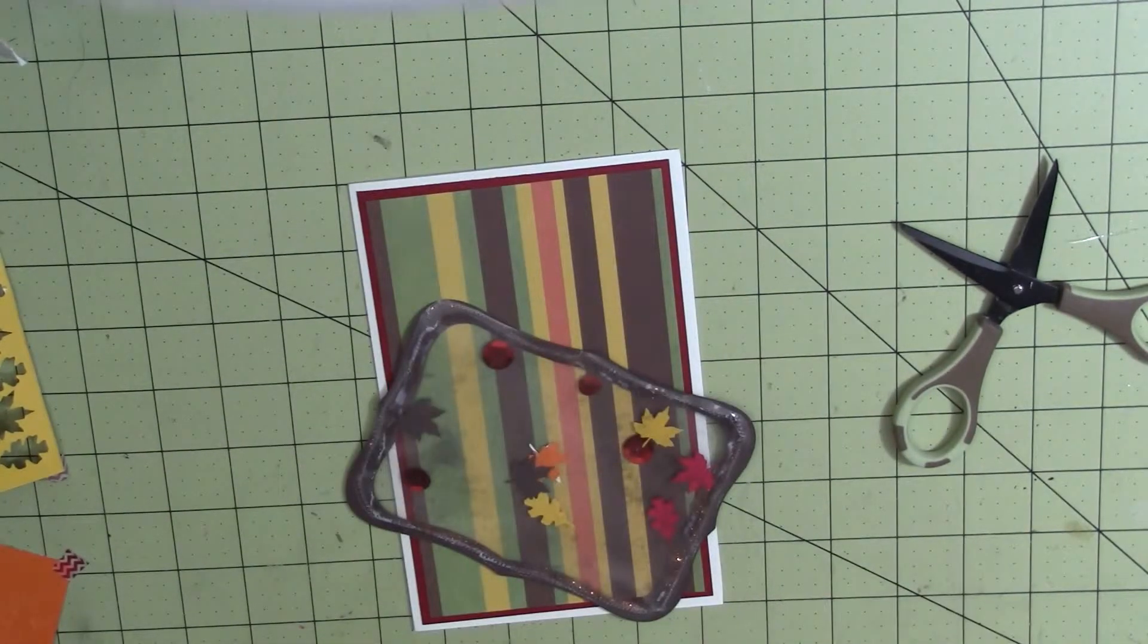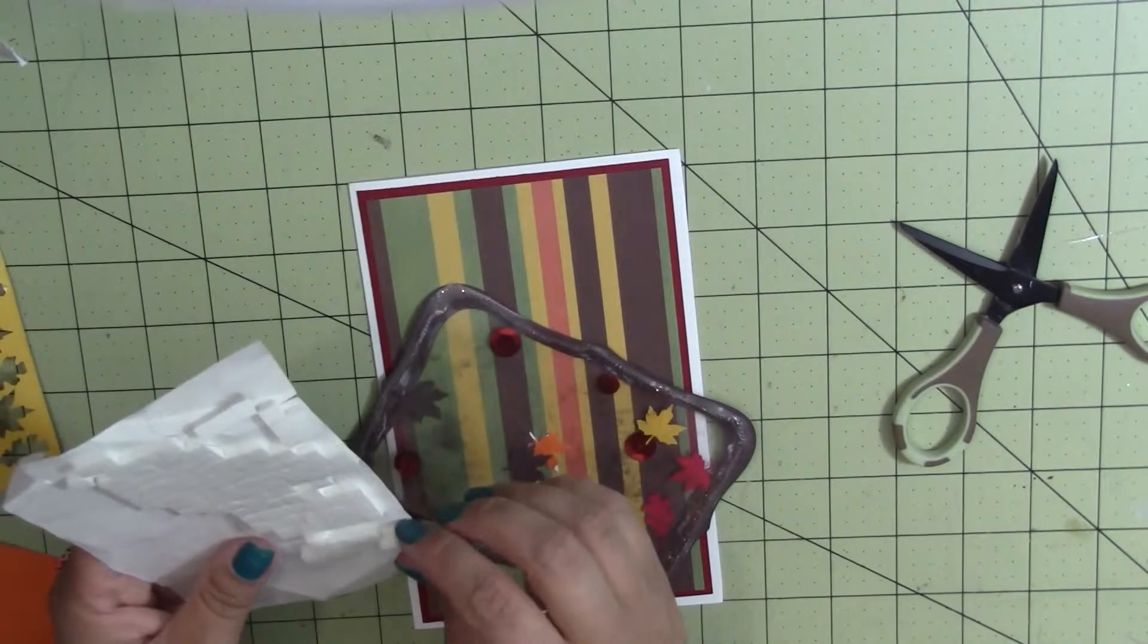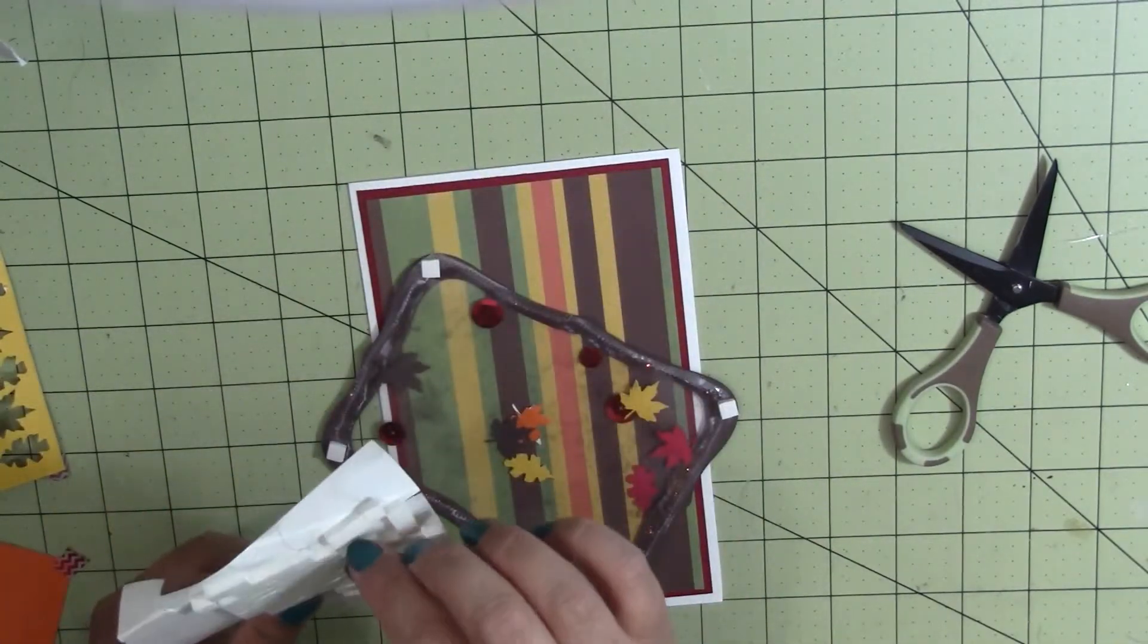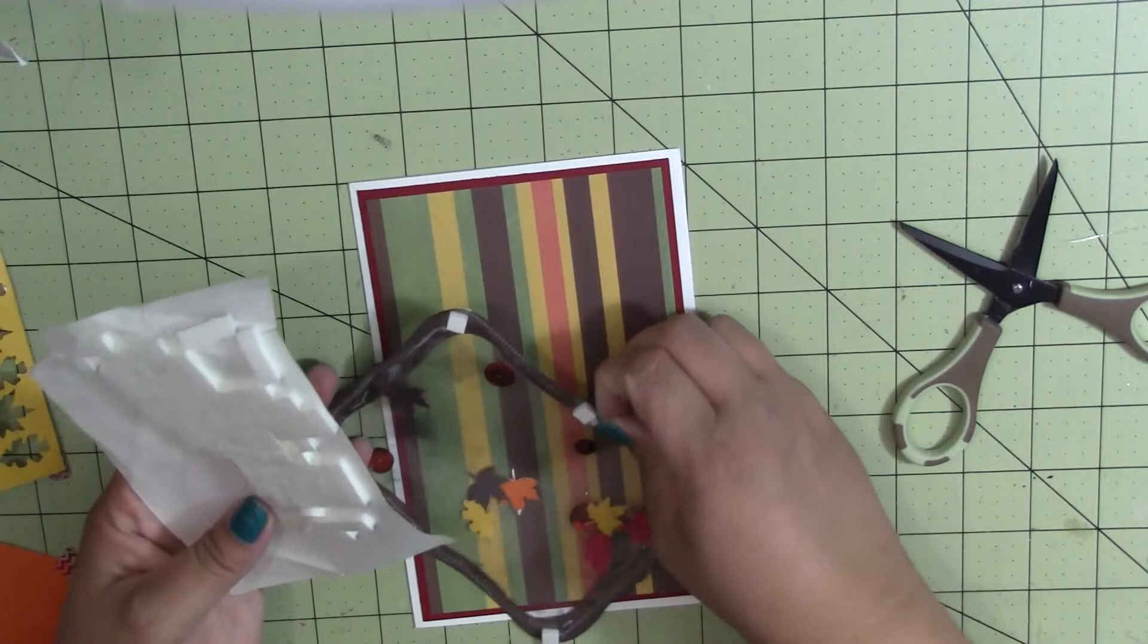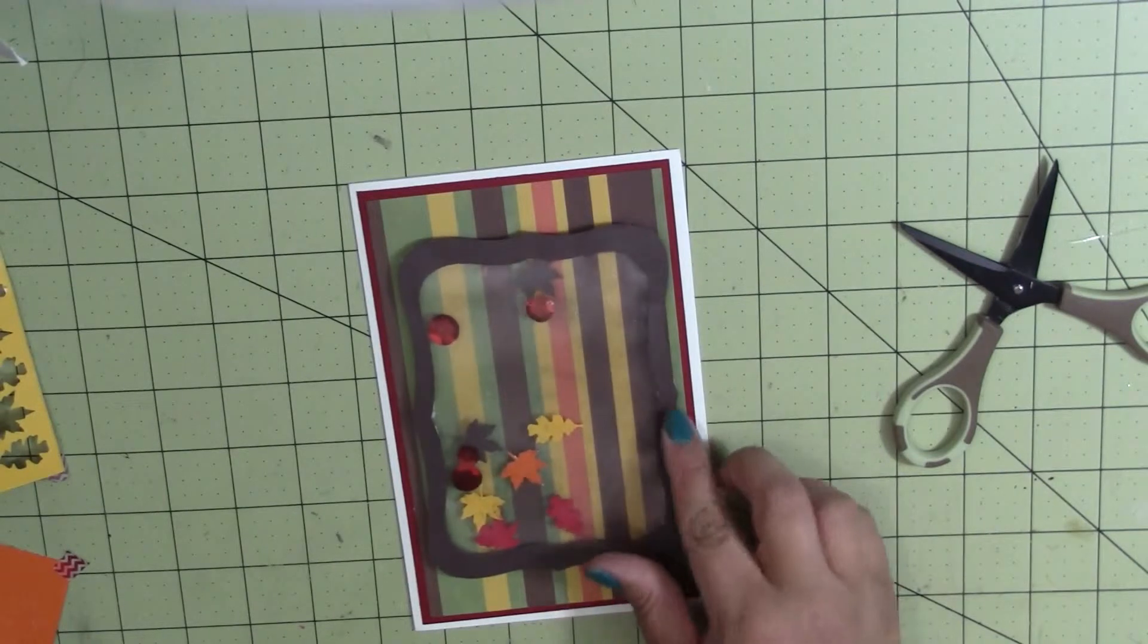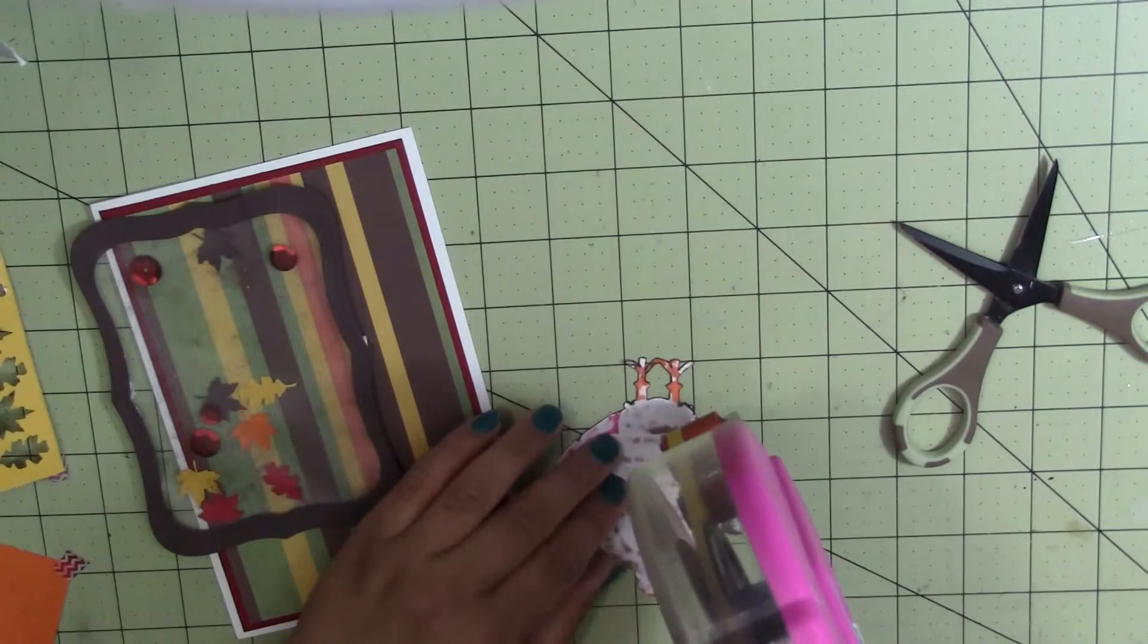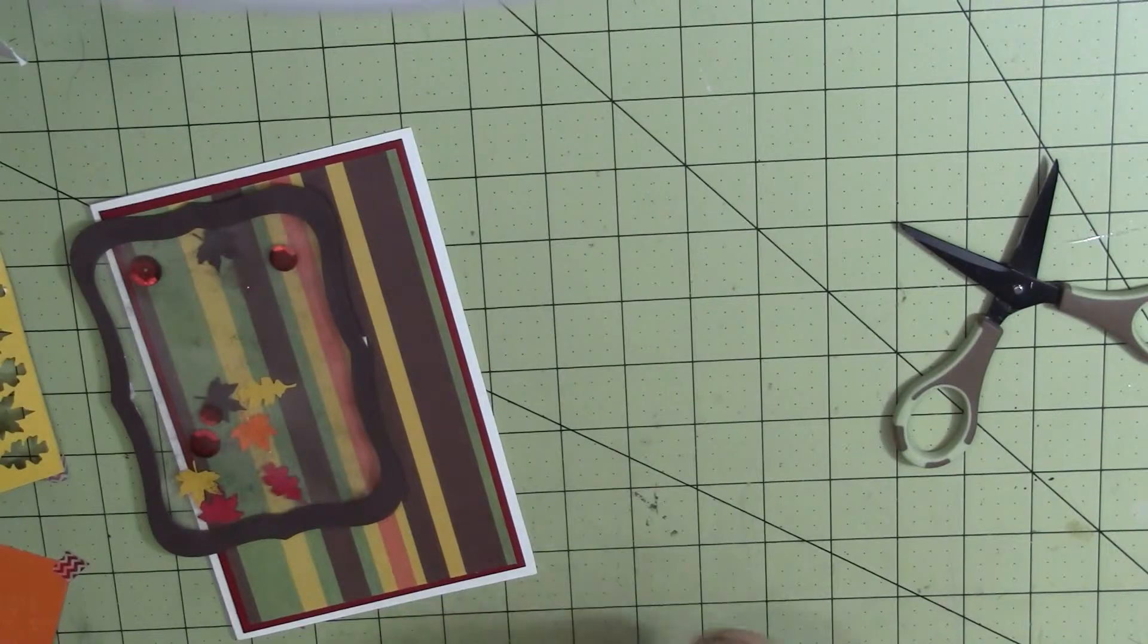Okay, so now I'm going to grab some foam pop dots. I'm sorry, I'm not using foam dots. I'm using pop dots. And these are from Thermal Web. I'm going to just kind of put them here and there. And then I'm going to go ahead and just throw ATG on the back of Mr. Too Cute here. And I'm going to go over him pretty good. Except for his feet. I'm not going to do his feet.